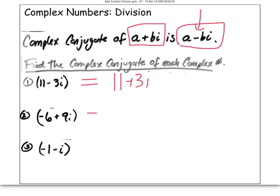The complex conjugate of negative 6 plus 9i is negative 6 minus 9i. Do not change the real number. The conjugate of negative 1 minus i is negative 1 plus i.